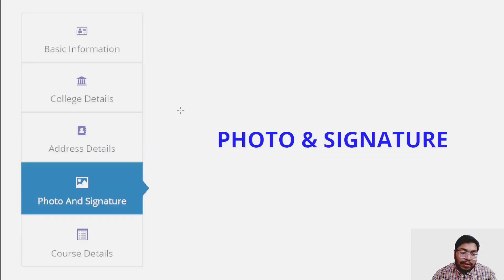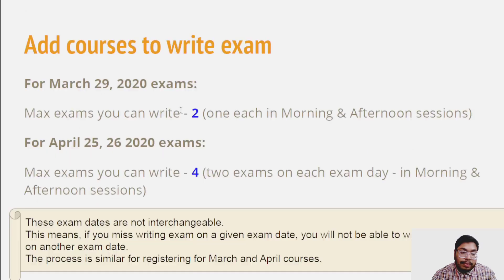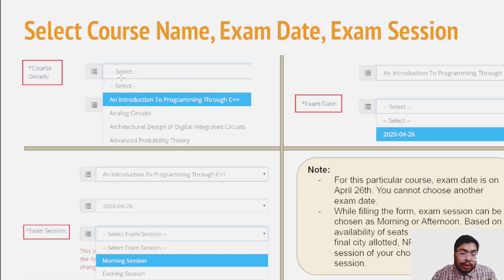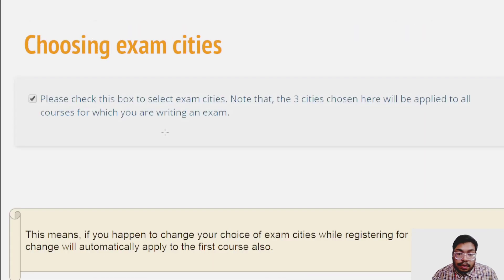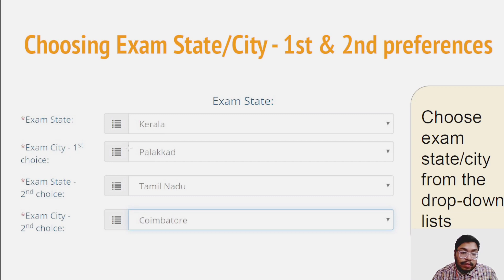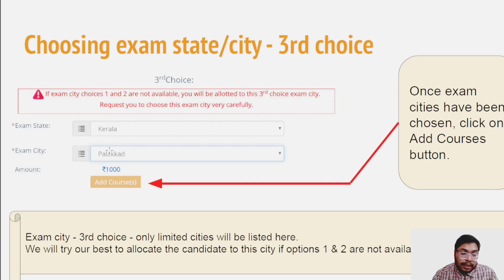Address details are also very important. Then upload your photo and signature, and ensure your course is selected correctly — add courses accordingly. Then you have to choose your exam city; you can choose two to three exam cities.